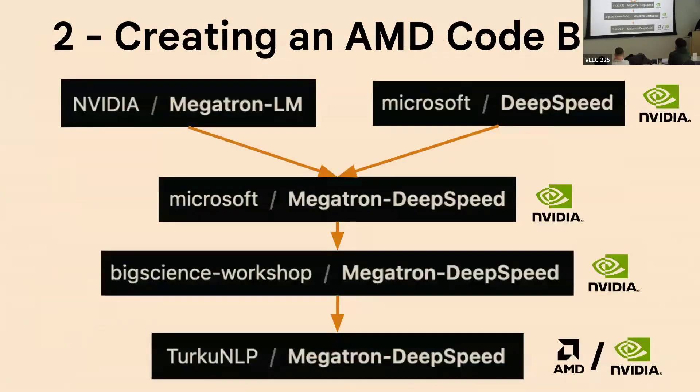So we created a code base that has a long history. Basically, there was NVIDIA with its Megatron LM code base, and then Microsoft had DeepSpeed, and they got merged into Megatron DeepSpeed, done by Microsoft and NVIDIA together. And then we revamped that into Megatron DeepSpeed under the big science workshop for training Bloom. And then we took that again and turned it into Megatron DeepSpeed for AMD hardware and NVIDIA.